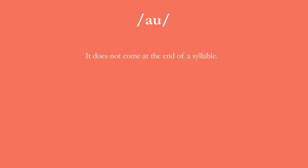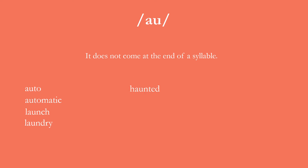We talked about au, and the important thing we said about it was that it does not come at the end of a syllable — that's a very helpful thing to remember. So we have many words like auto and automatic, launch and laundry, haunted, taunted — which means they teased somebody — sauce and pause.